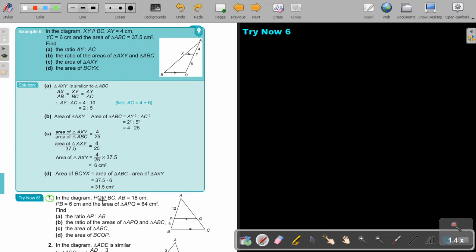In the diagram, PQ is parallel to BC. AB is 18. PB is 6. The area of triangle APQ is 84.